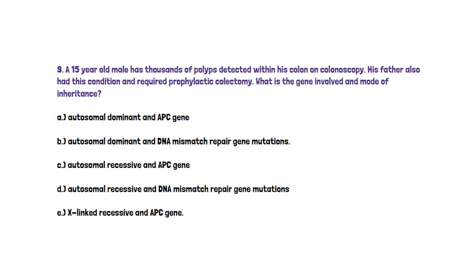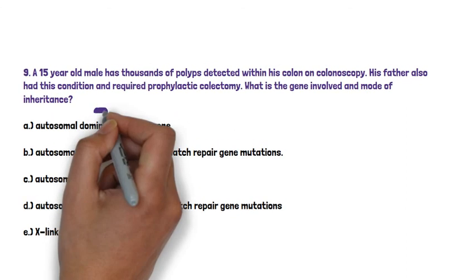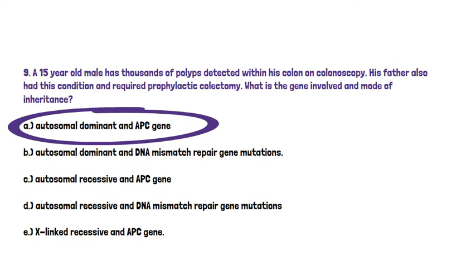The answer here is A. This condition is familial adenomatous polyposis (FAP). Some of you may have mistaken it for HNPCC — hereditary non-polyposis colorectal cancer — which is another inherited autosomal dominant condition. They are both autosomal dominant conditions: HNPCC is associated with the DNA mismatch repair genes, and FAP is associated with the APC gene. That's something you have to commit to memory and learn.